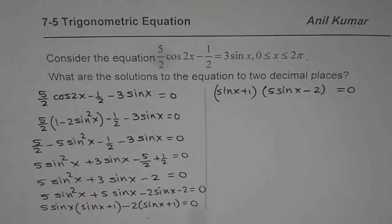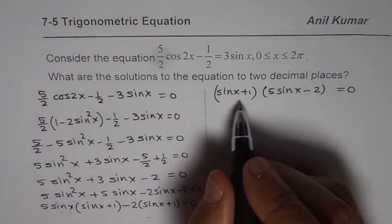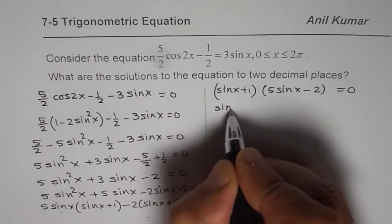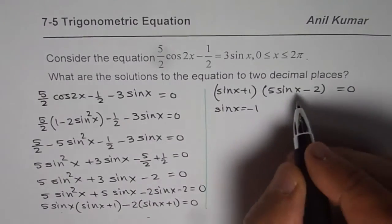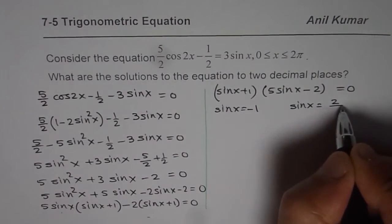The factored form will be (sin(x) + 1)(5sin(x) - 2) equals 0. Now clearly we have two sets of solutions. One is sin(x) equals -1, the other is sin(x) equals 2/5.